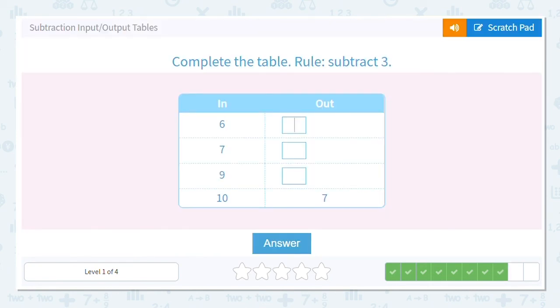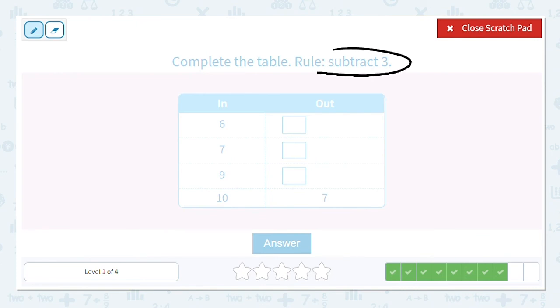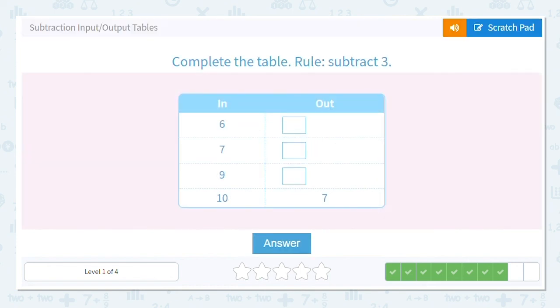Next one. Again, we are subtracting 3. So I'm going to write it in. And let's check with our last one because it's already done. 10 minus 3 does equal 7. So 6 minus 3 equals 3, 7 minus 3 is 4, 9 minus 3 equals 6. So we have 3, 4, 6, and 7.